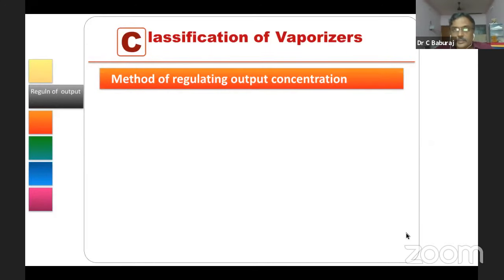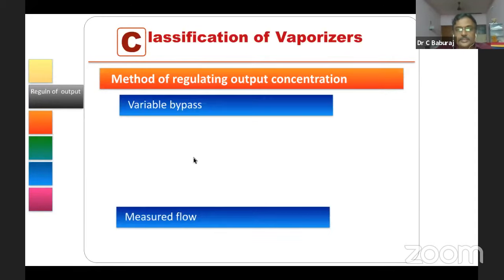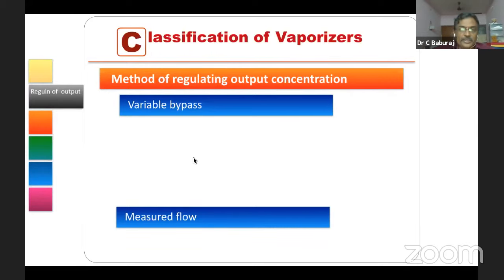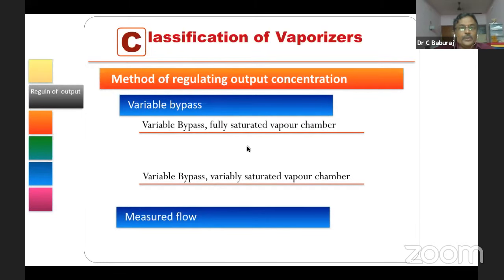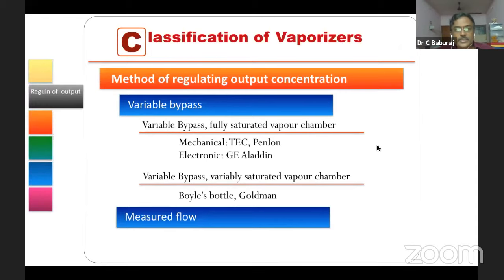The second classification is by method of regulating output concentration. There are two divisions: variable bypass and measured flow. Most modern vaporizers excluding a few are variable bypass. A classical example of measured flow is the copper kettle. Variable bypass can be further divided into variable bypass with fully saturated vapor chamber — our Tec vaporizers come here — and variable bypass with variably saturated chamber, example being Boyle's bottle. Measured flow example is copper kettle.